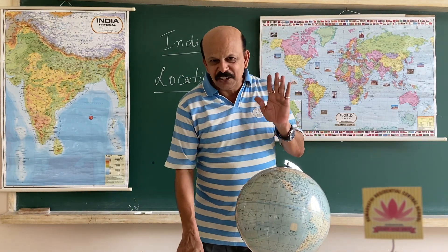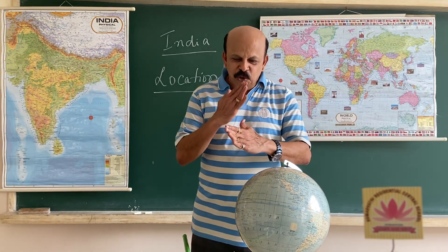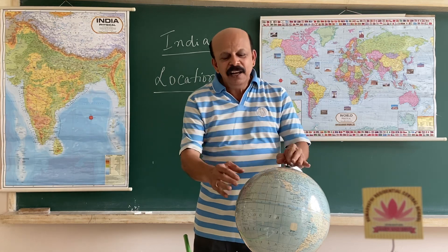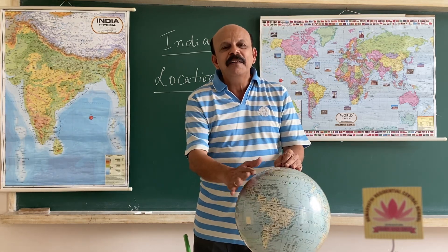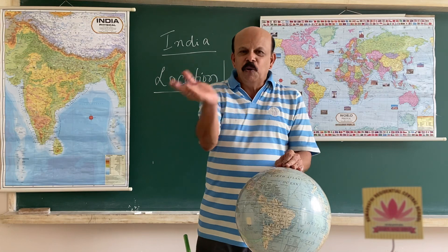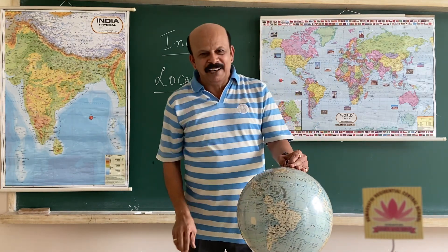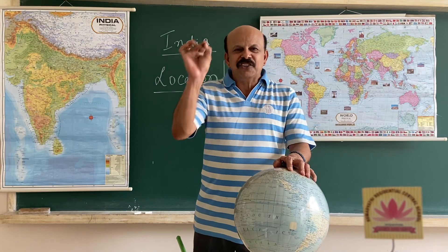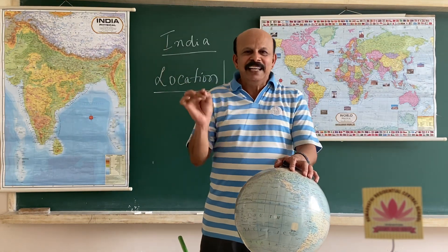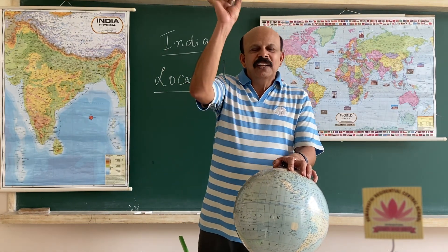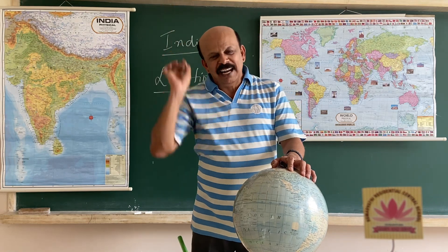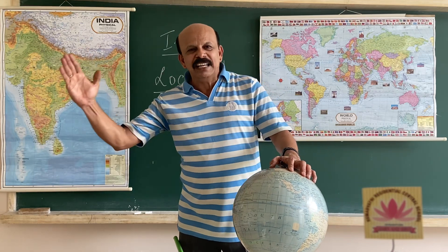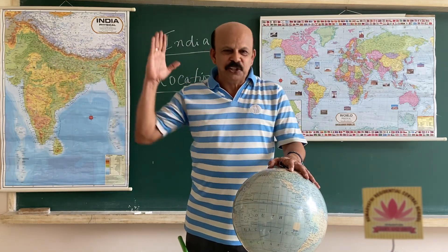Understood, dear children? What are the things you should understand? With reference to latitudes and longitudes, you should check the location of a particular place. If you open the textbook to the first chapter — that is the location — you can see that India is extending from 8 degrees north to 37 degrees north latitude, and 68 degrees east to 97 degrees east longitude.